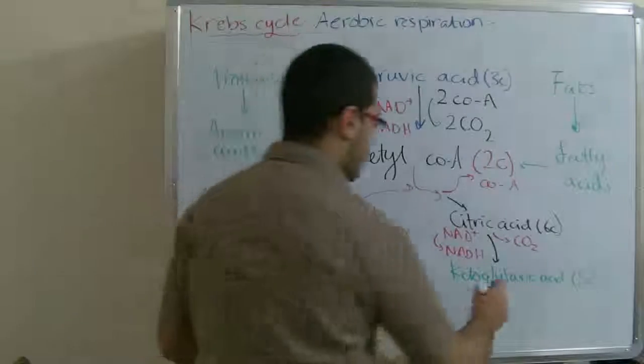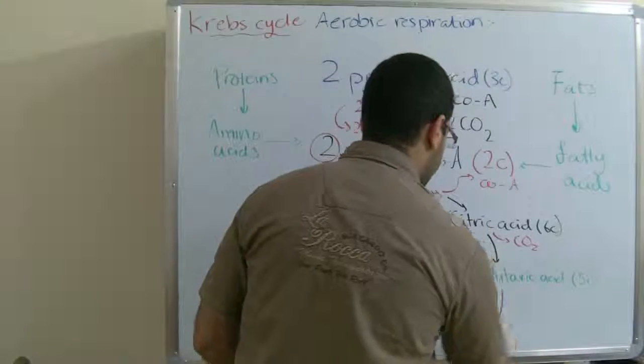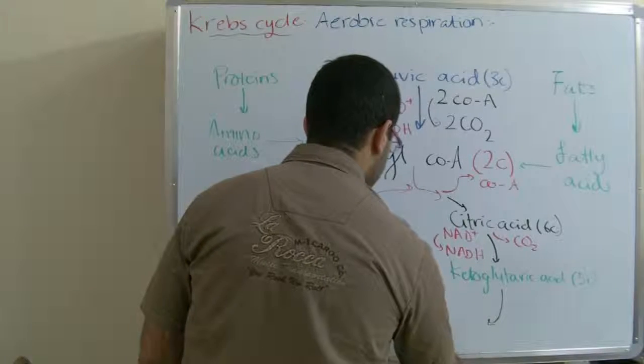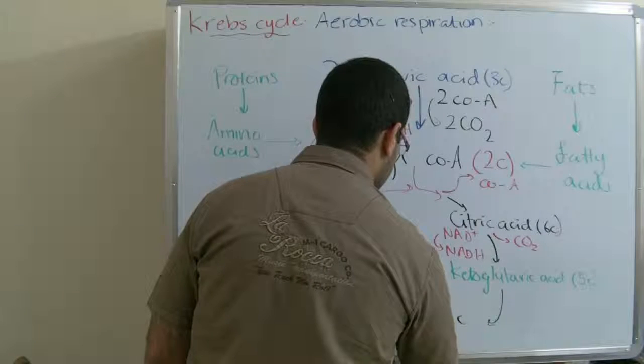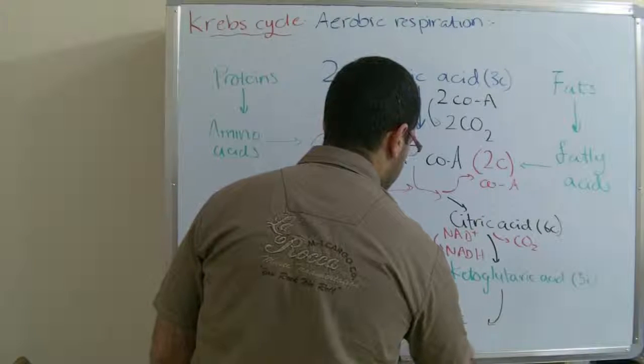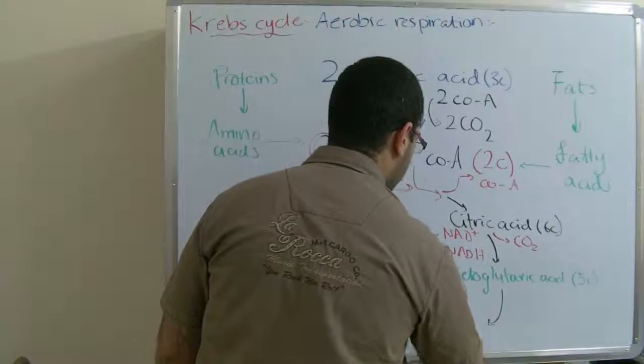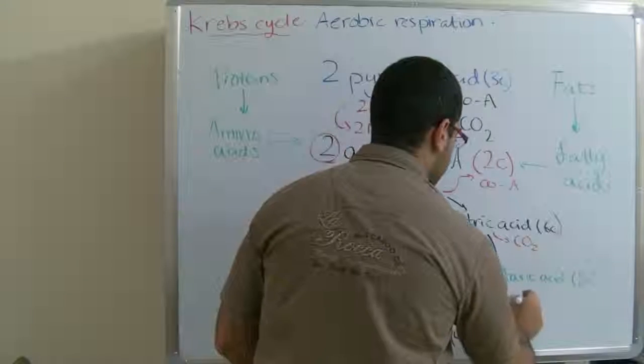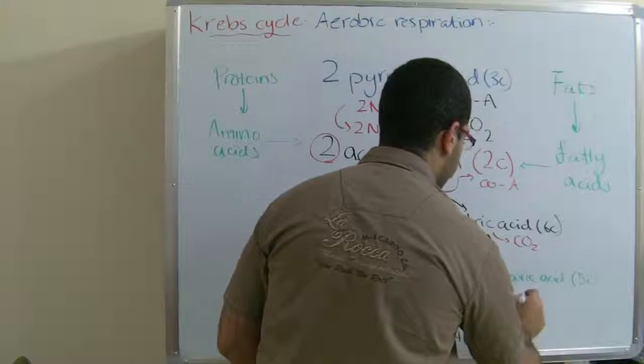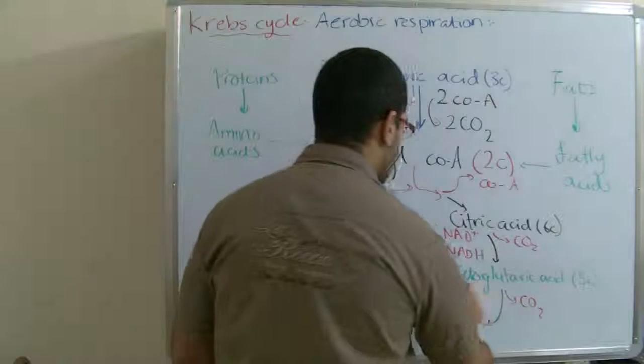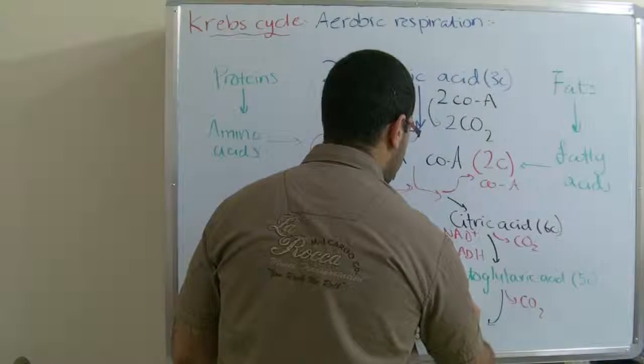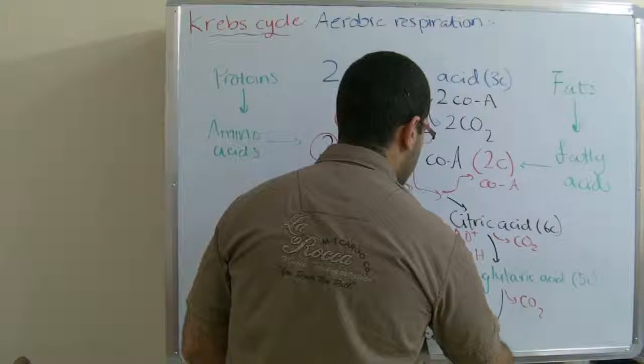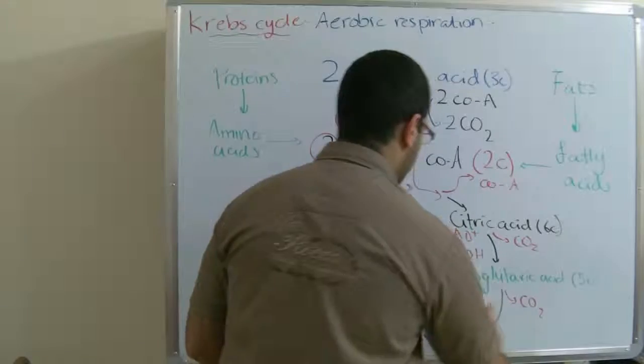Then ketoglutaric acid transforms into succinic acid with four carbon. So we have here another carbon atom lost with production of carbon dioxide, and we have NAD+ also, one reduced into NADH.